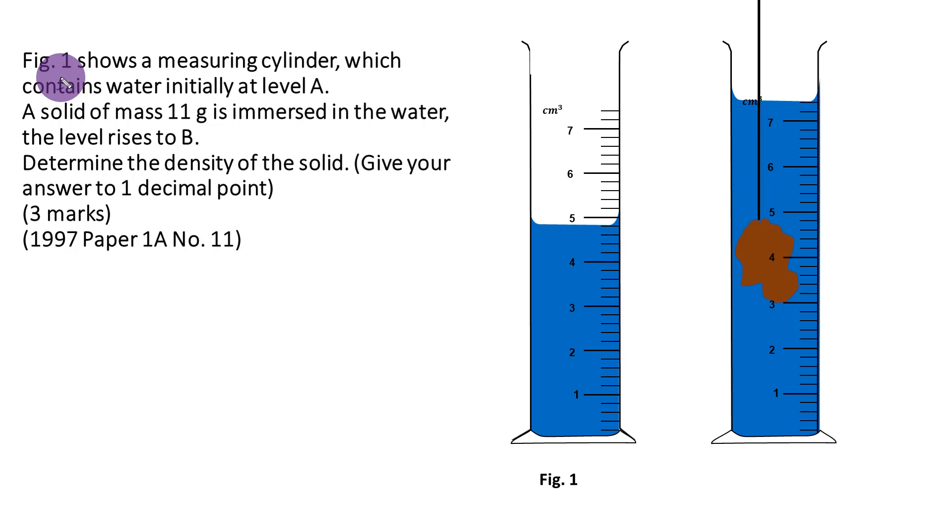Let's start by reading the question together. Figure 1 shows a measuring cylinder which contains water initially at level A. This is level A. A solid of mass 11 grams is immersed in the water. The level rises to B. This is level B. Determine the density of the solid. Give your answer to one decimal point. This question is for 3 marks.